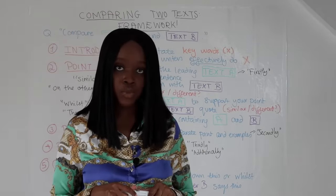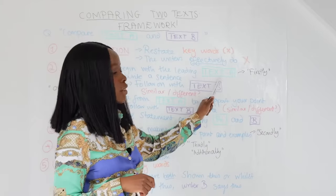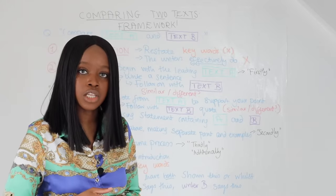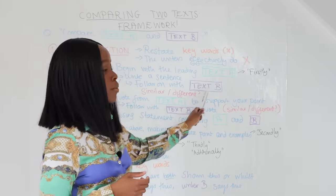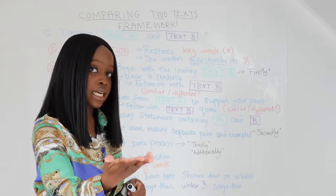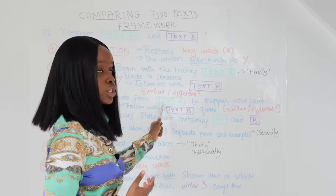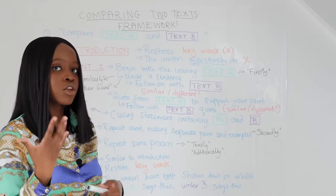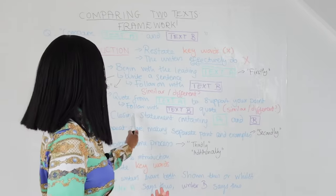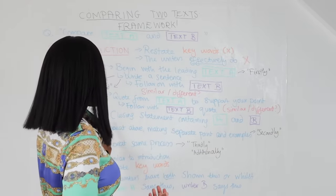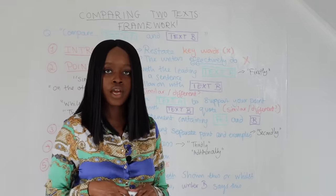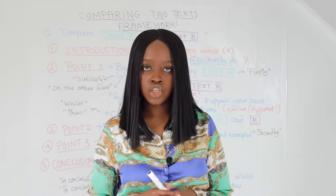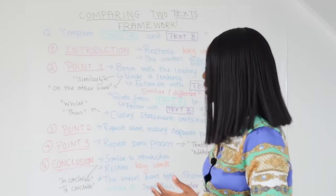To summarise, every paragraph after your introduction should have the following components: begin with the leading text (Text A) in relation to the keywords; write a sentence explaining what Text A says; then talk about Text B — is it similar or different? Quote from Text A to support your point — this shows it's not just your assumption but backed by the text. Then follow with a quote from Text B. Finally, tie it together with a closing statement: 'this text shows this, whilst this other text shows that.'